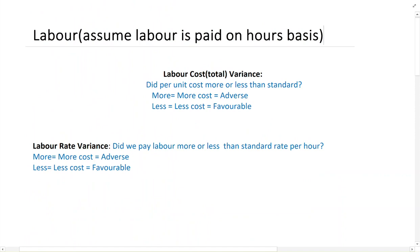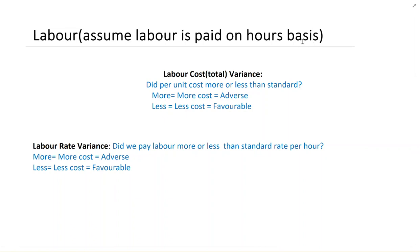Next we have labor variance. Just like material variance, in total we want to look at the labor cost per unit — whether we have spent more or less per unit. If we spend more it would be adverse; if we spend less it would be favorable. Remember, in variance analysis we assume that labor is paid on an hourly basis. If labor is paid on a piecework basis, these variances don't make sense.